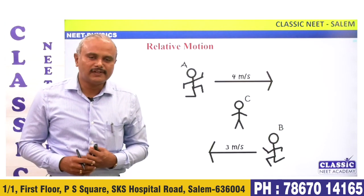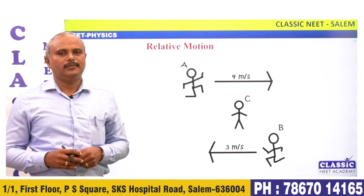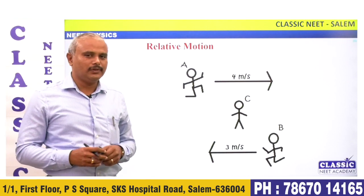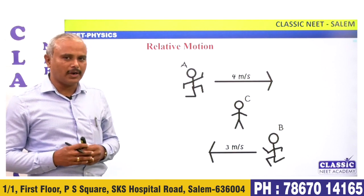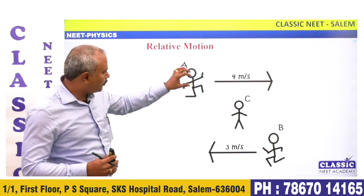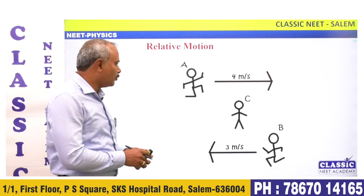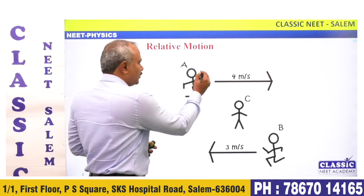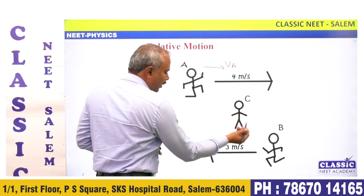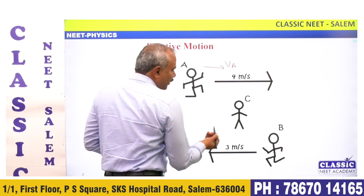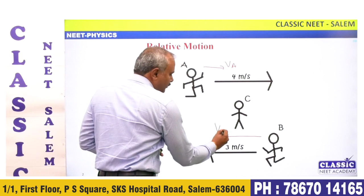Okay, first thing: relative motion. So what is relative motion? Let's see some applications. There is a body moving with velocity V_A, and another body B is also moving in some direction with velocity V_B.